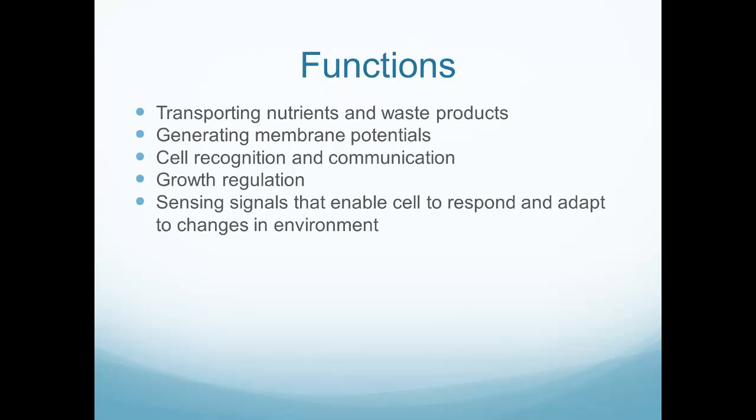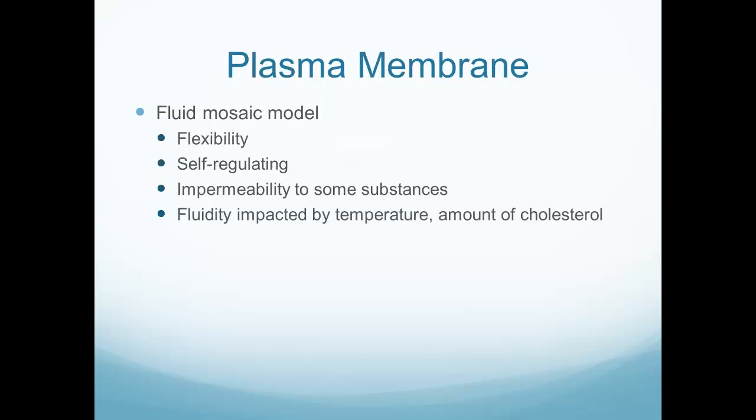There's also sensing signals that enable the cell to respond and adapt to changes in the environment. When we talk about environment here, we're mostly talking about the body's internal environment — not the external one. For example, a change in the body's pH could cause the cell to adapt and respond. That said, cells on the outside of the body, like in the mucosa and skin, can also sense the external environment.